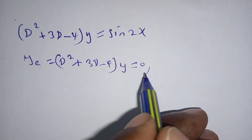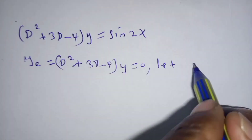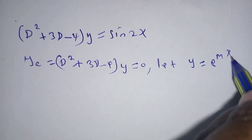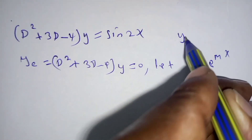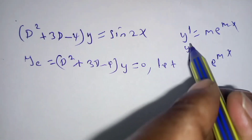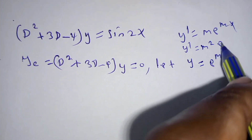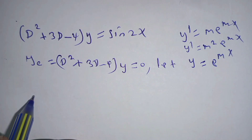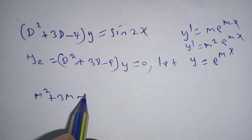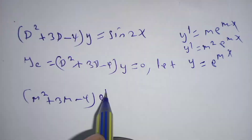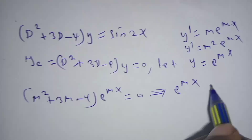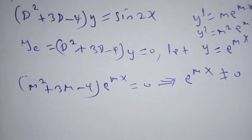To solve the complementary part, we let y equal to e^(mx). Then we get y prime equal to m·e^(mx) and y double prime equal to m squared·e^(mx). Substituting, we get m squared plus 3m minus 4 times e^(mx) equals zero. Since e^(mx) cannot equal zero, our quadratic equation is set equal to zero.